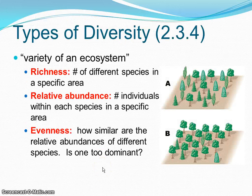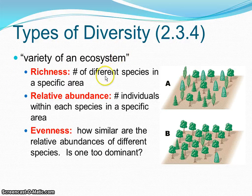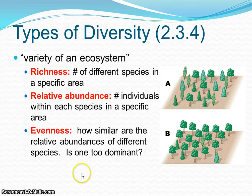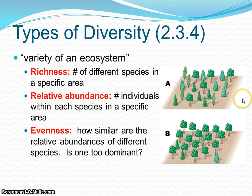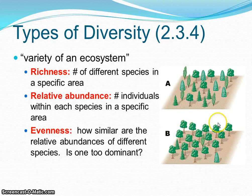Let's talk about diversity now. Diversity in general is going to be the variety in an ecosystem, and we can think about it as three different things. The first one is richness — the number of different species in a specific area. Looking at two different tree farm plots, A and B, I can count four different types of organisms in each. Because they each have four different species, these two plots have the same richness, so if that's how we're measuring diversity, they would have the same diversity.